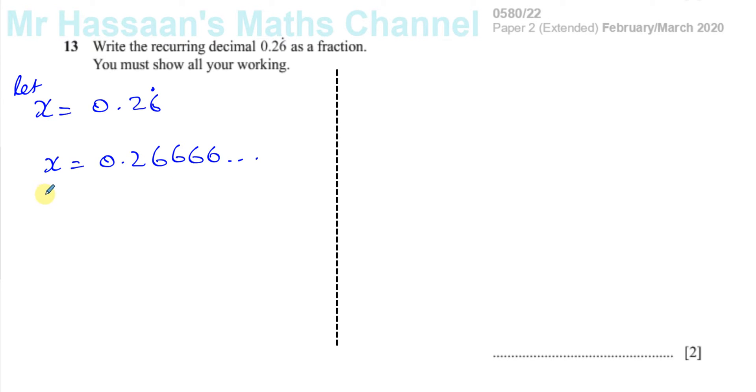So for example here, if I write this as 10x equals 2.6666, whatever recurring, that is one of the ways of writing it, where you're starting with the pattern of 6.